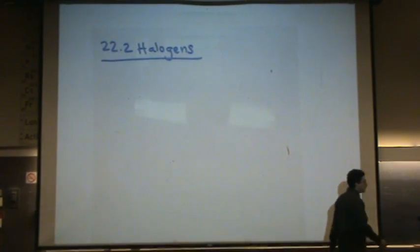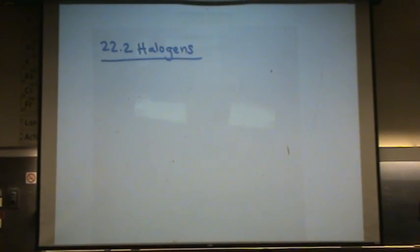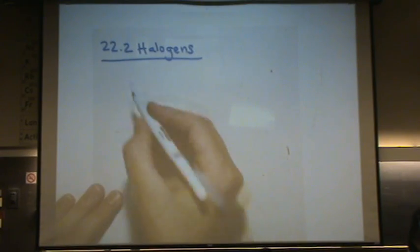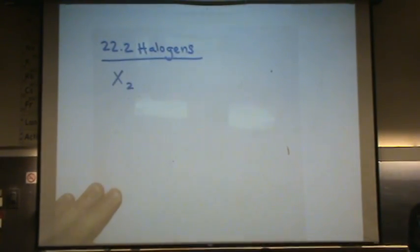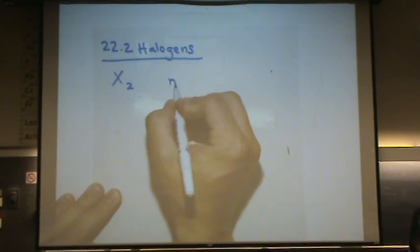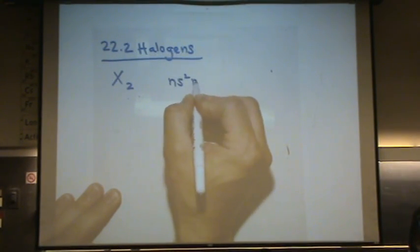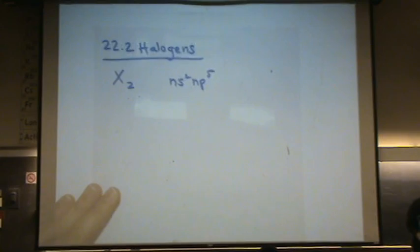Halogens, they form diatomics. Halogens are noted by the letter X, capital letter X, they form diatomics. Each halogen would be NS2NP5 for its electronic configuration.